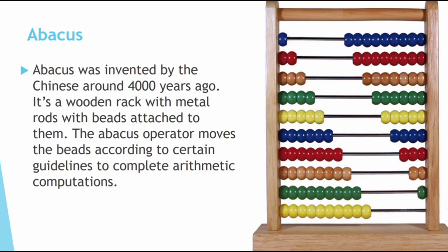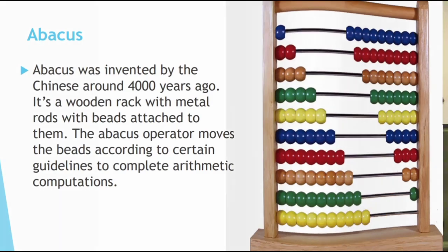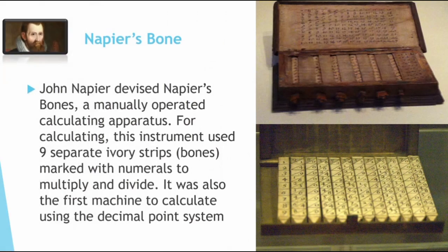The abacus operator moved the beads according to certain guidelines to complete arithmetic computation. Next are Napier's Bones, devised by John Napier — a manually operated calculating apparatus. This instrument used nine separate ivory strips marked with numerals to multiply and divide. It was also the first machine to calculate using the decimal point system.